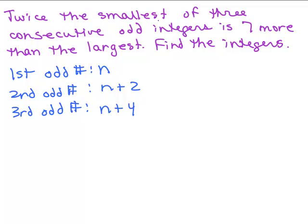So this is the defining your variables part of the problem. Then it says twice the smallest of these numbers is seven more than the largest. So basically, in words, it's like saying twice the small odd is seven more than the largest. So you're going to add seven to something. You're going to add seven to the large odd number.